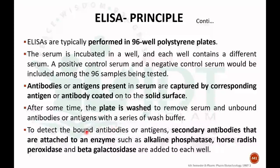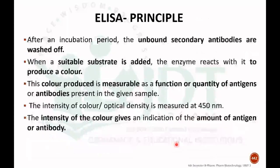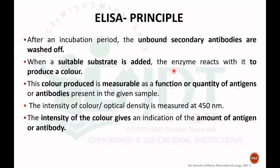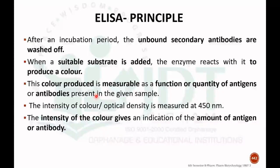To detect the bound antibody or antigen, a secondary antibody attached to an enzyme such as alkaline phosphatase, horseradish peroxidase, or beta-galactosidase is coated to each well. After the incubation period, the unbound secondary antibodies are washed off. Then a suitable substrate is added so that the enzyme reacts to produce a color. The color produced is measurable as a function of the quantity of antigen or antibody present in the sample, and the optical density is measured at 450 nanometers by colorimetry.